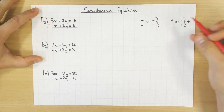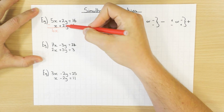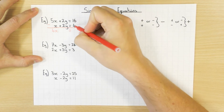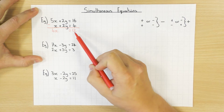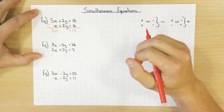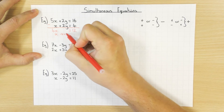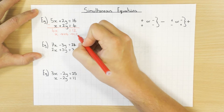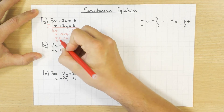I'll draw my take away line there. 5x take away x is 4x. 2y take away 2y is nothing — that's why we call it the elimination method. And 16 take away 4 is 12. So by eliminating a variable, we now have a simpler equation: 4x equals 12. You can solve it in your head, using the balanced method, or using the flowchart. I'm going to use the flowchart.